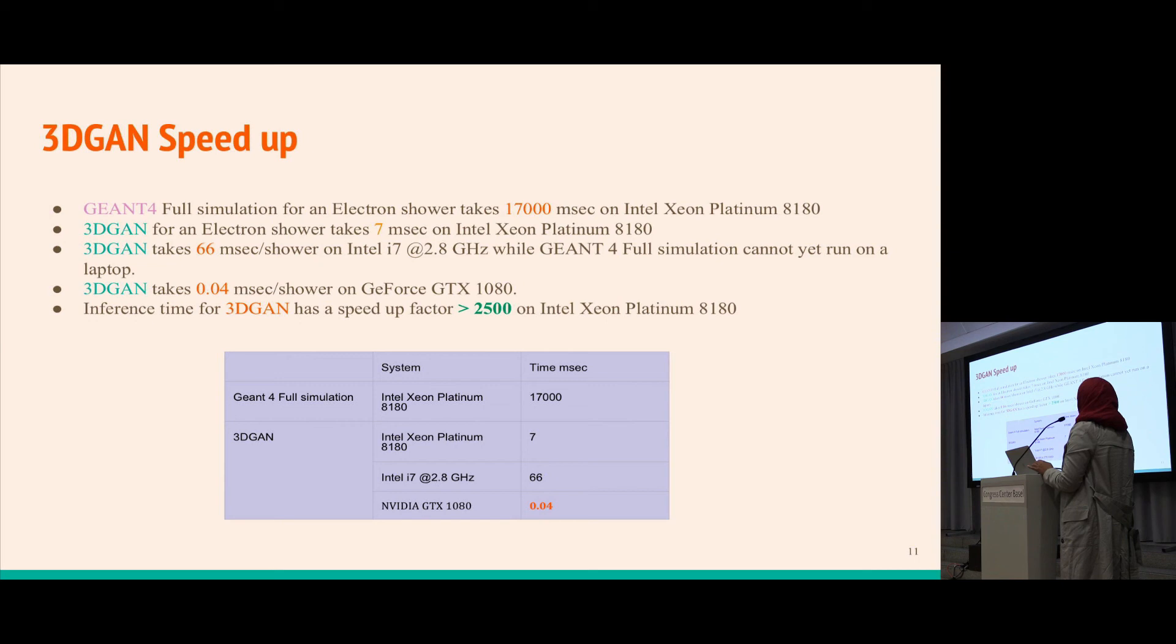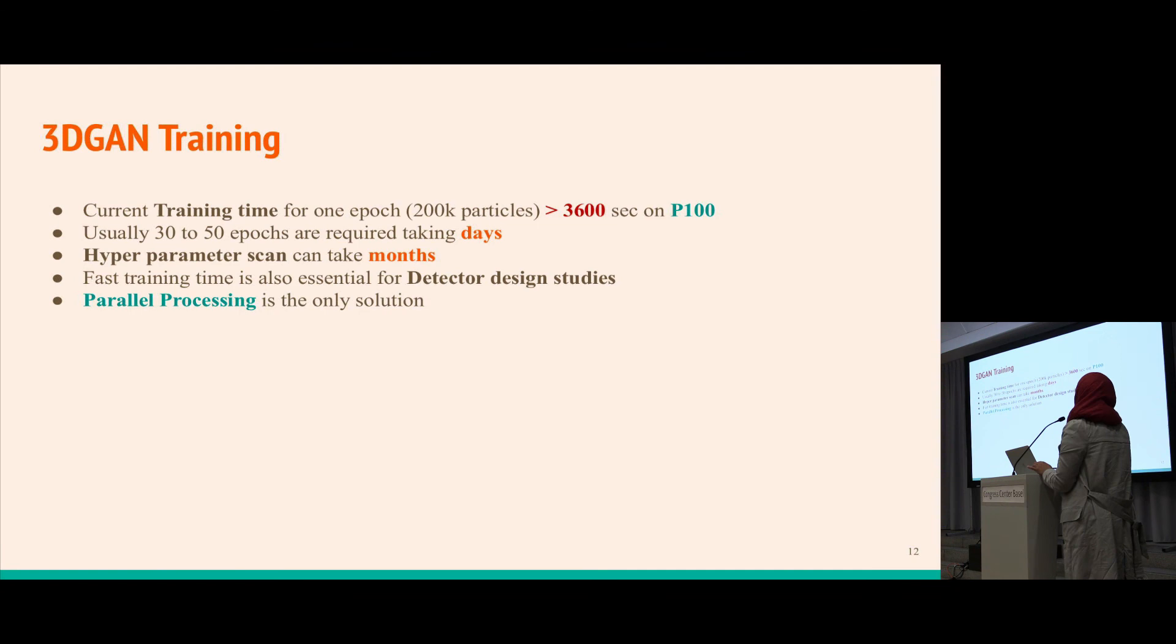3DGAN can run on a laptop Intel i7 taking 66 milliseconds per shower, or on GTX 1080 taking about 0.04 milliseconds. On similar hardware we have a factor greater than 2500 speedup. However, the current time for training one epoch is greater than 3600 seconds, about one hour on P100.